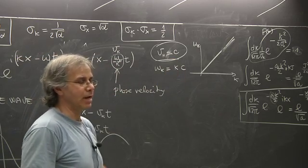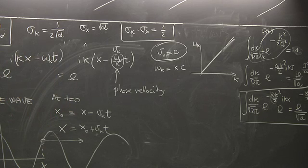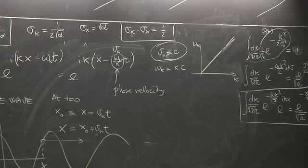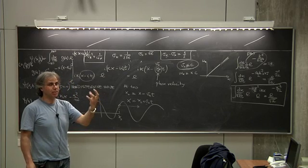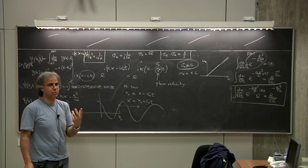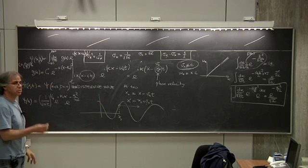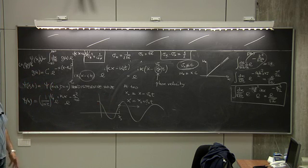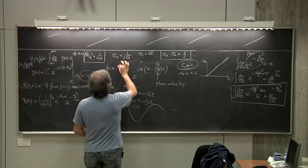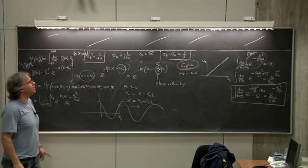This is not certainly going to help in describing a non-relativistic electron traveling, for a very simple reason: electrons do not travel with the velocity of light. I would like to have something for which the velocity with which something moves is essentially the momentum divided by the mass. There is no mass, no momentum here — everything moves with the velocity of light. That's not non-relativistic quantum mechanics. So I should look for something different — this cannot be just a linear function.